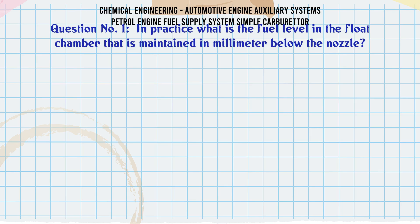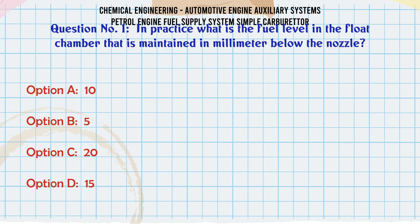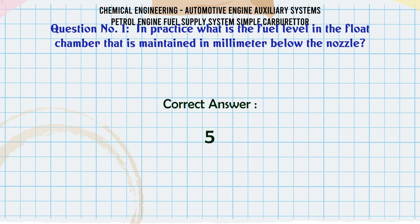In practice, what is the fuel level in the float chamber that is maintained in millimeters below the nozzle? A. 10. B. 5. C. 20. D. 15. The correct answer is 5.